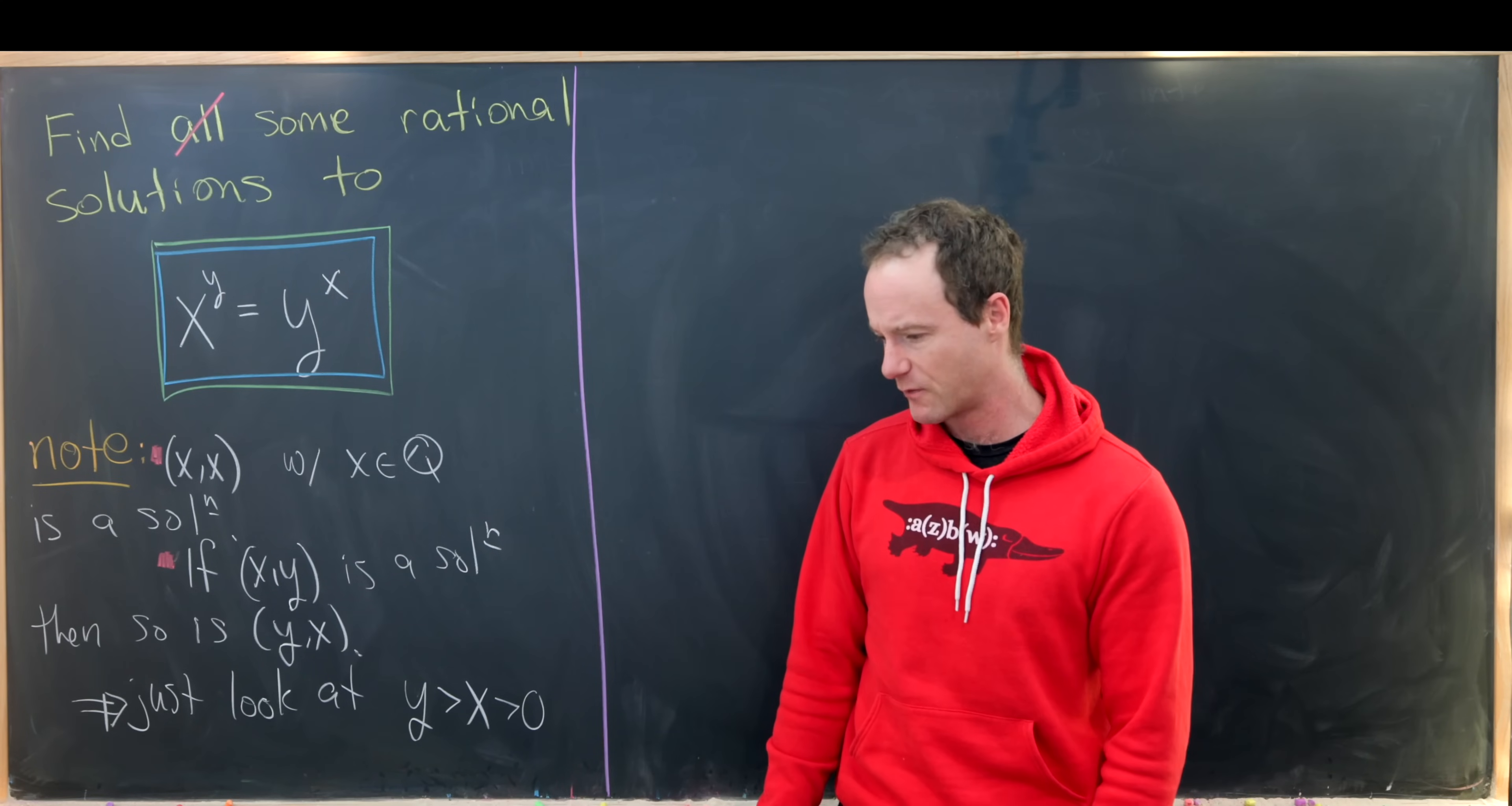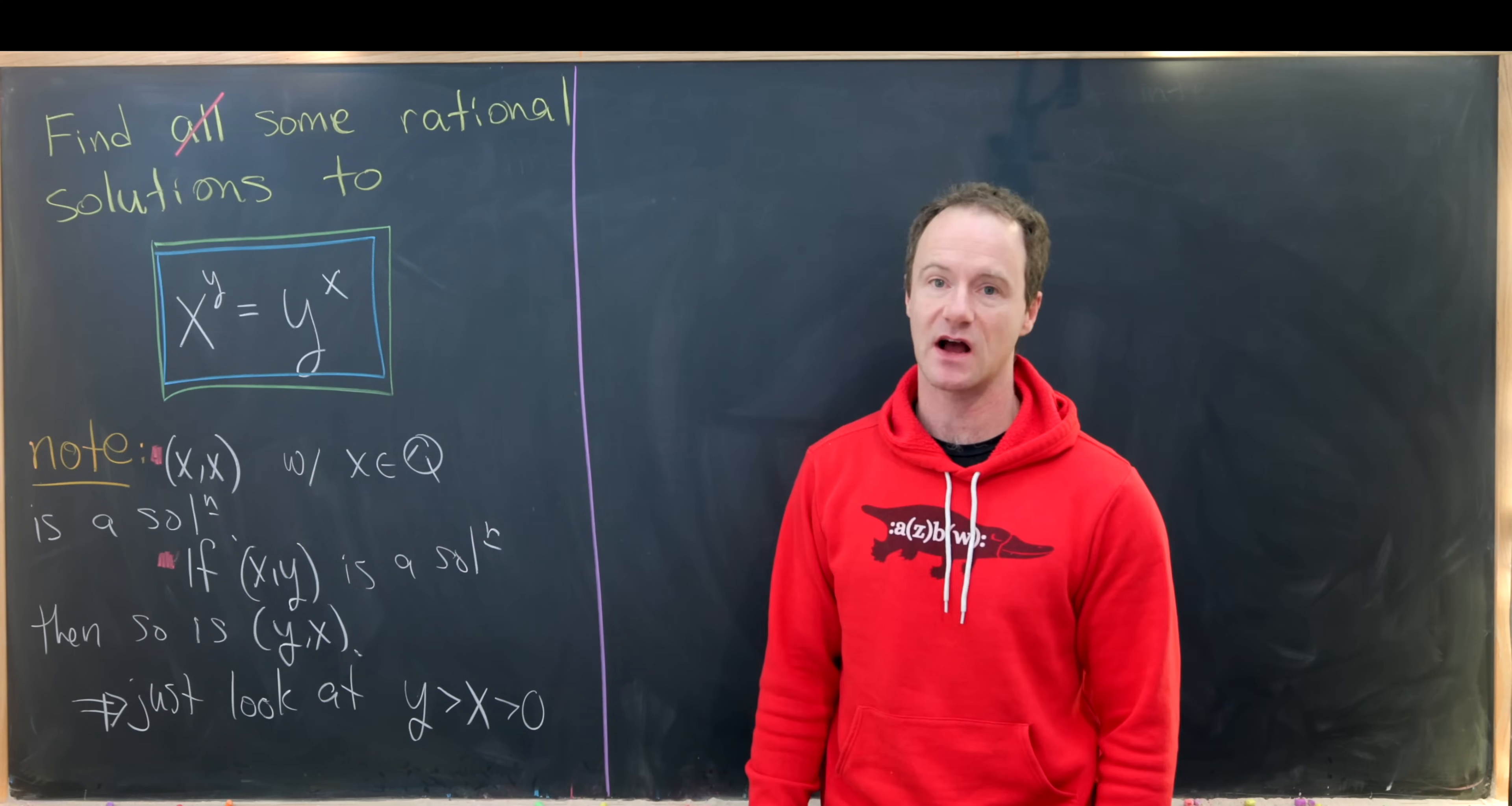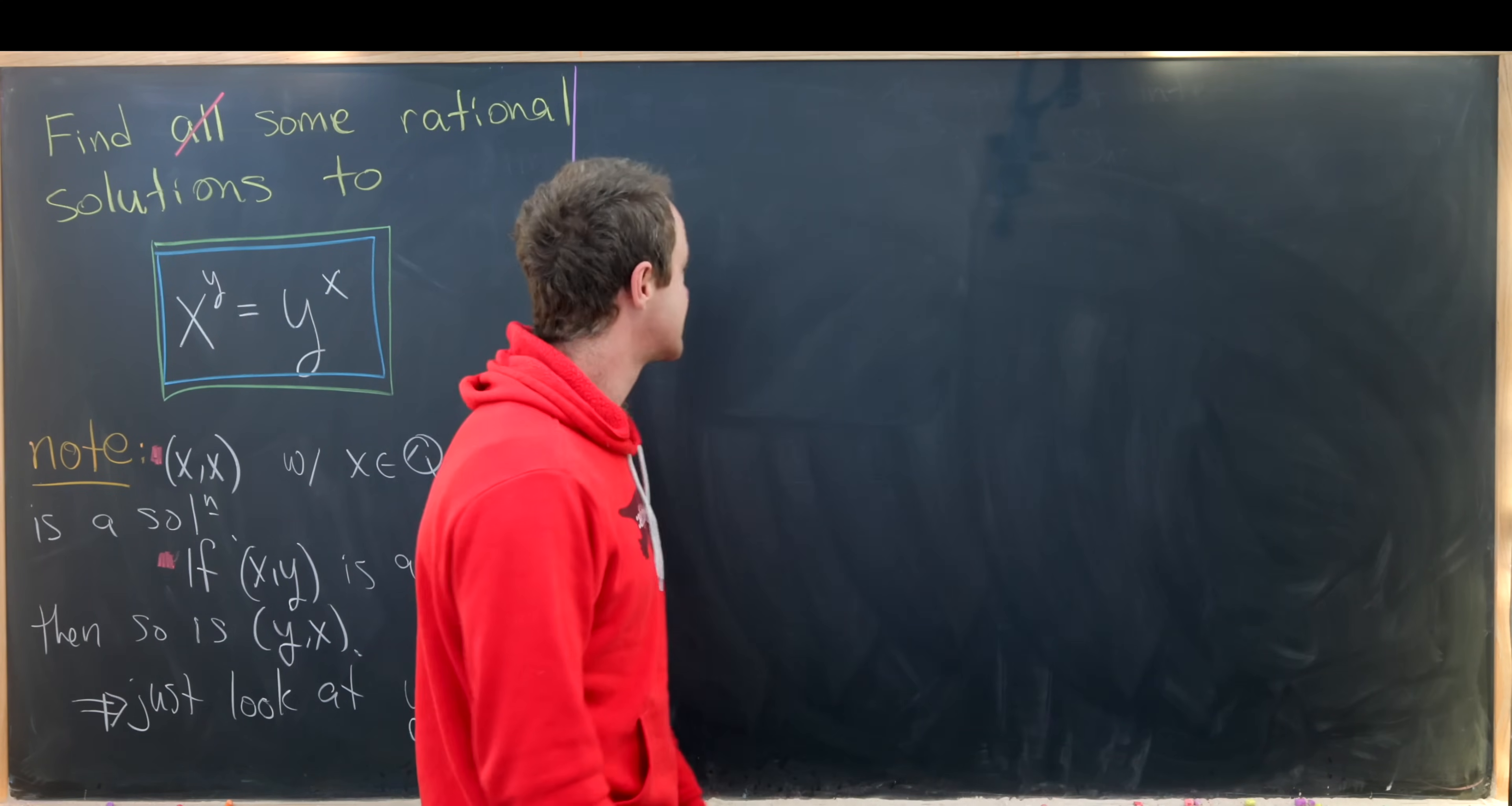Before we get started, I want to make some observations that will simplify the starting point. So let's notice x comma x, in other words, if y and x are the same, then that's clearly a solution because we've got symmetry built into this equation. Furthermore, if x comma y is a solution, then so is y comma x because of the symmetry here. So that means we just might as well look at the case when y is bigger than x. And furthermore, we'll take both of them to be bigger than zero just to make it work a little bit nicer.